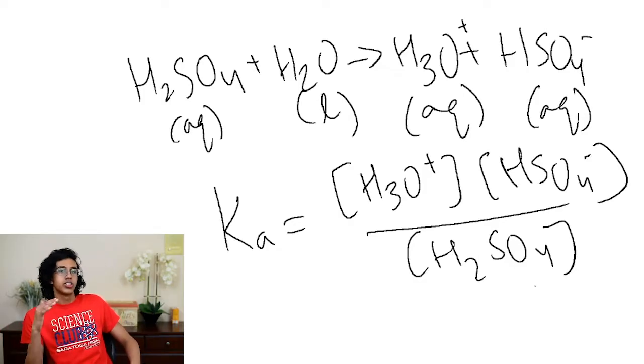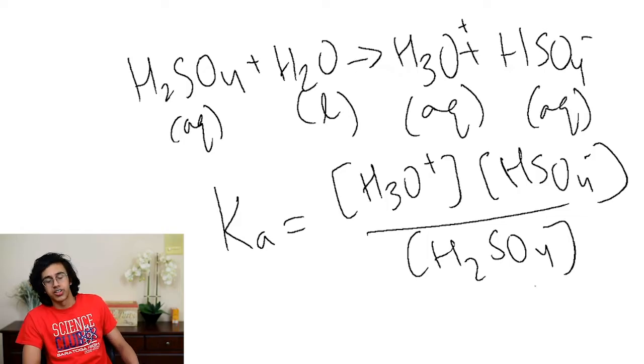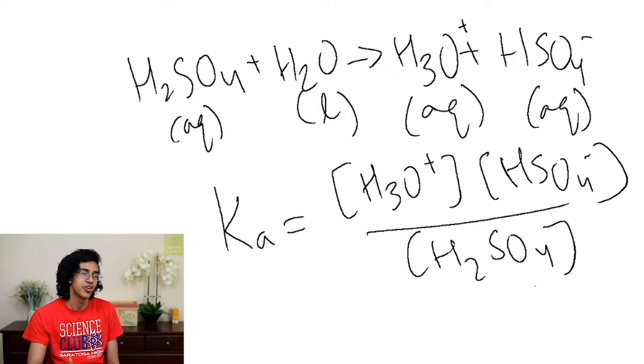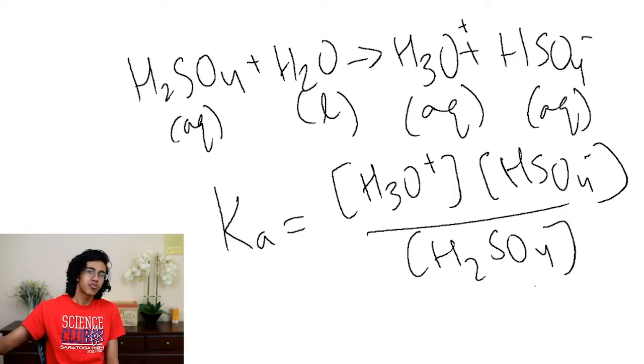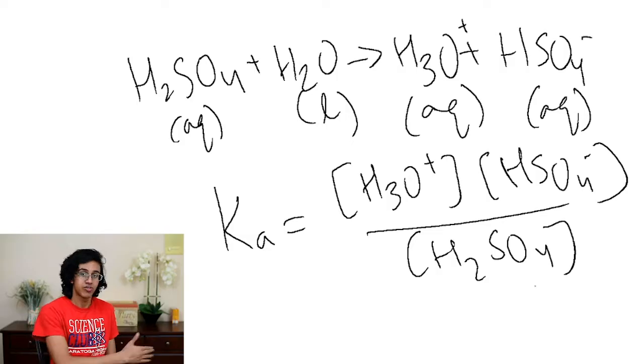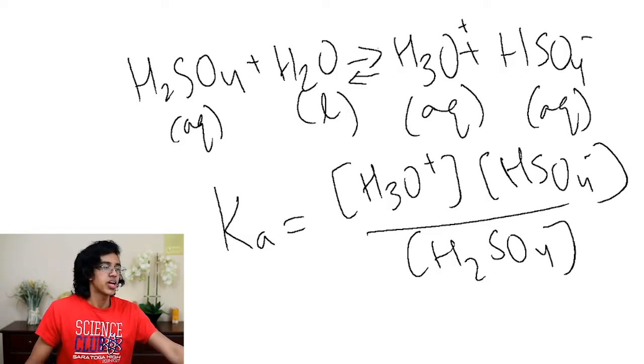So what the heck does the K value actually tell us? It tells us how much the products are favored over the reactants. You're putting concentration of products over concentration of reactants. So if your K is really big that means that you want to have a lot more concentration of products. If K is really small then you want to have less products and a lot of reactants.